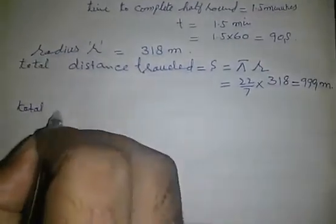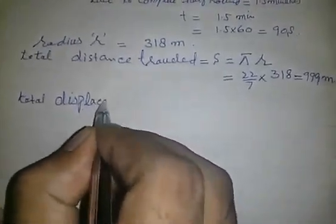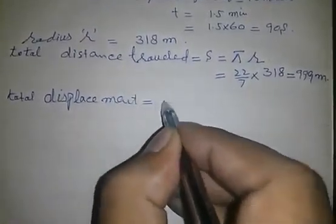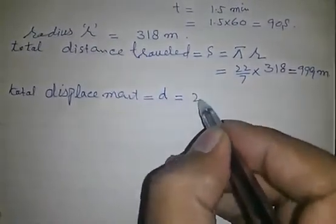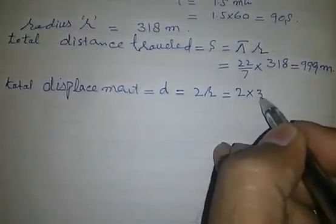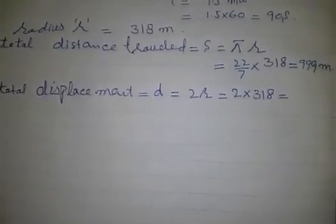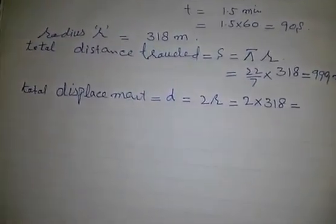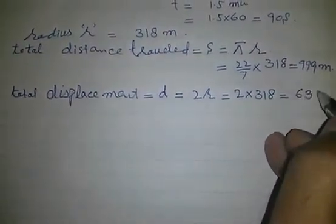Total displacement d equals 2R equals 2 into 318 equals 636 meters.